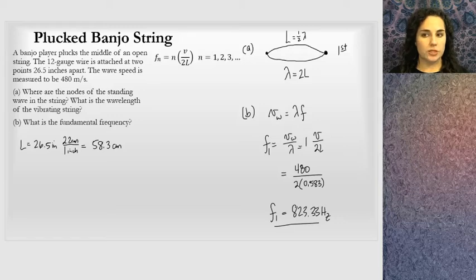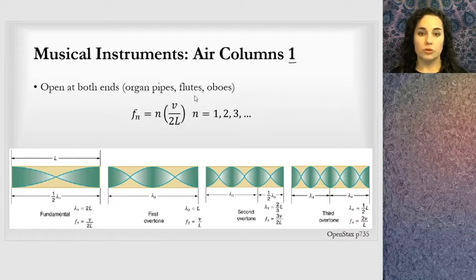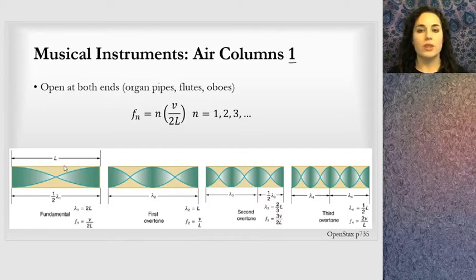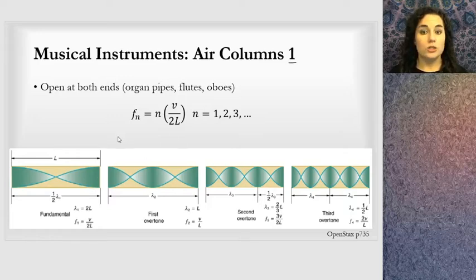Next: Air Columns 1. This is a tube open at both ends — like organ pipes, flutes, and oboes. What's interesting is that a tube closed at both ends behaves the same as one open at both ends. Because there's no place to anchor the wave the way a string is anchored, the ends are open and the node will be in the center for the fundamental frequency. This is half of a wavelength, giving the same equation: fn = nv / 2L.